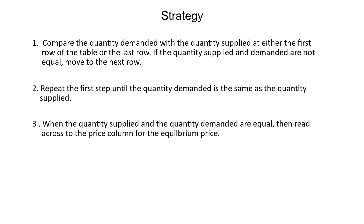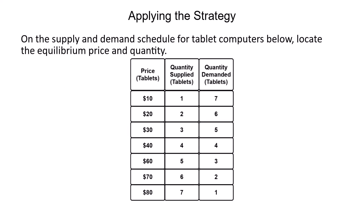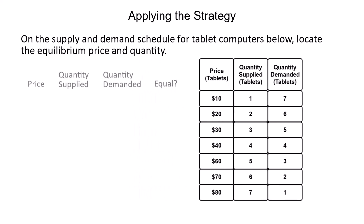Next, let's apply the strategy to the problem statement. Let's start looking for the equilibrium point beginning with the first row of the table. The lowest price in the table is $10 per tablet. At a price of $10 per tablet, the quantity supplied is 1 tablet and the quantity demanded is 7 tablets. So the quantity supplied and the quantity demanded are not equal.